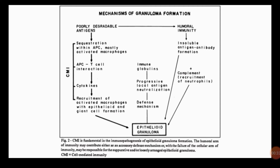An antigen presenting cell is a cell that displays antigens complexed with the major histocompatibility complex on their surfaces. These antigen presenting cells then interact with T-cells. T-cells recognize these complexes using their T-cell receptors and release cytokines. The release of cytokines leads to the recruitment of activated macrophages with epithelioid cells and giant cell formation, which in turn leads to epithelioid granuloma formation.